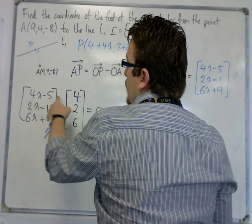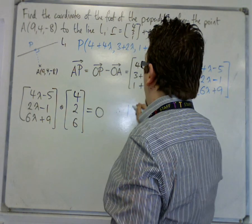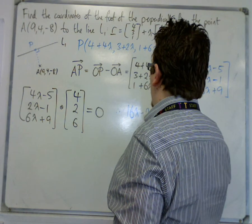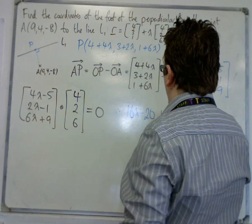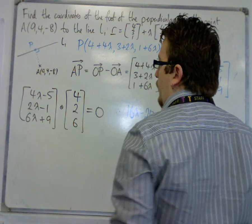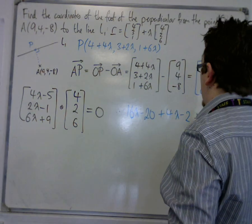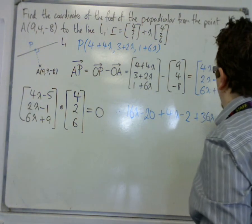So I have 4 lambda take away 5 times 4, so that's 16 lambda take away 20. I've got 2 times 2 lambda minus 1, so that's 4 lambda minus 2. And I've got 6 lots of 6 lambda plus 9, so 6 lots of 6 lambda is 36 lambda, and 6 lots of 9 is 54.